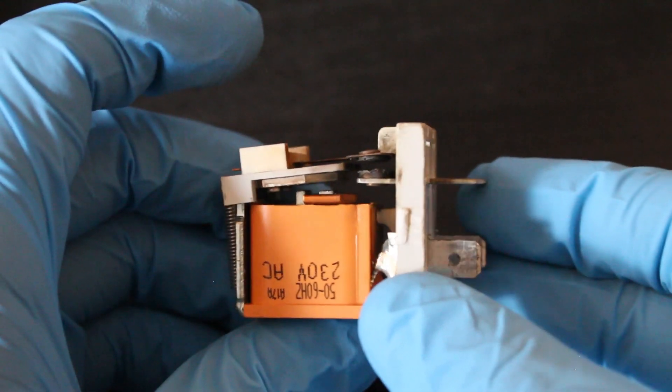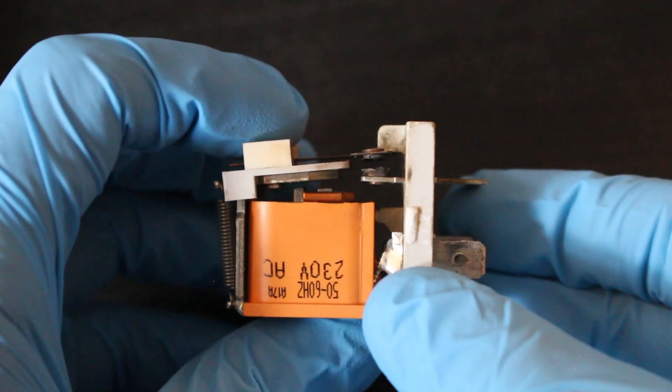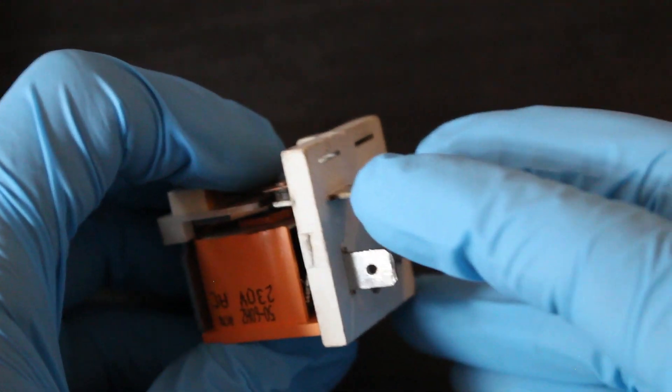In this case, we can see it's normally open. So when this coil is energized, it will overcome the strength, close these contacts and now we can send power through these set of contacts right here.